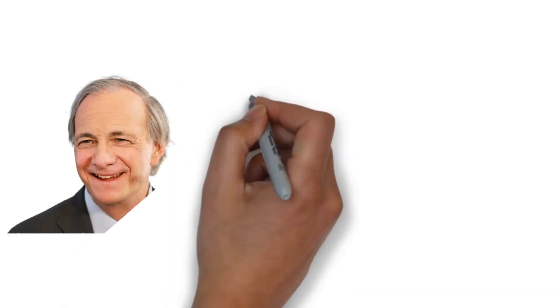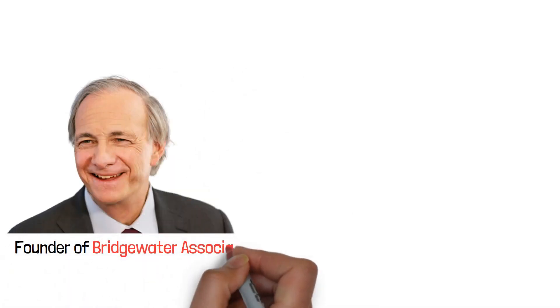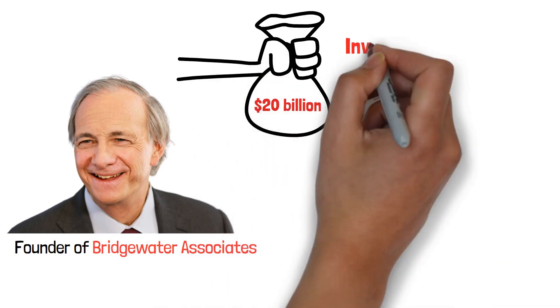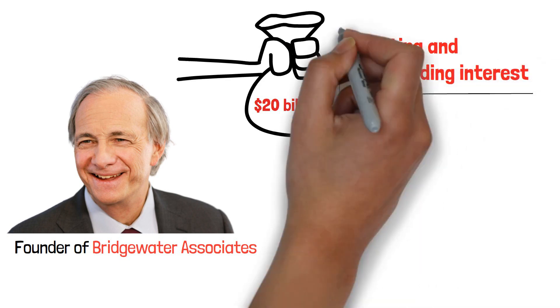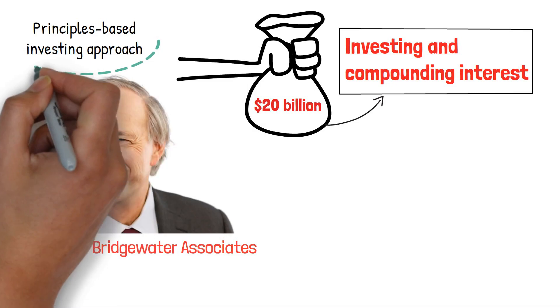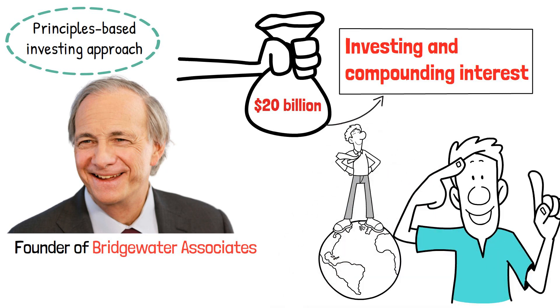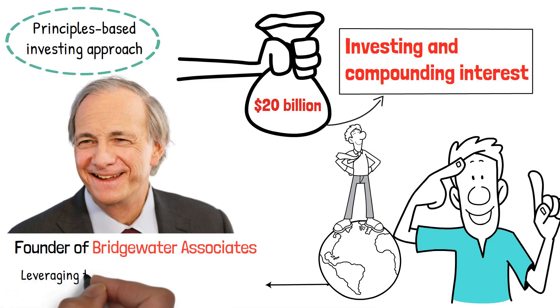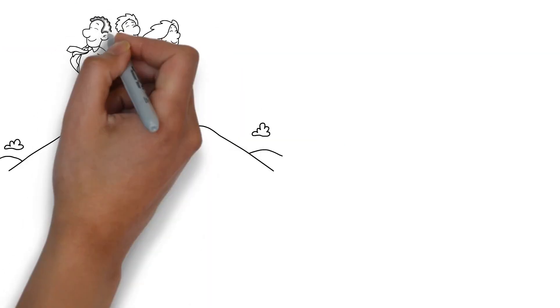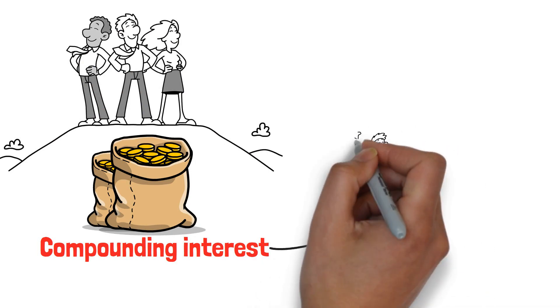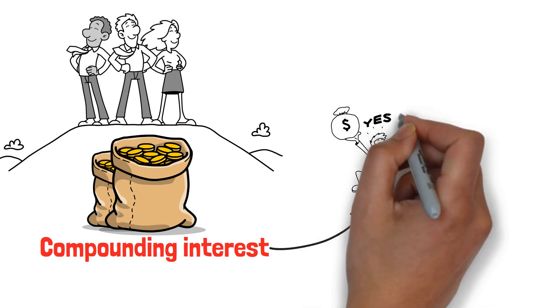Another famous example is Ray Dalio, the founder of Bridgewater Associates, one of the world's most significant hedge funds. He has amassed a net worth of more than $20 billion through his investing and compounding interest expertise. Dalio is known for his principles-based investing approach, which includes a thorough understanding of the economic and political landscape and the psychological biases that can influence investment decisions. Dalio has achieved incredible financial success by leveraging the power of compounding interest and intelligent investment strategies. These few well-known individuals have amassed a fortune through compounding interest. The key takeaway is that regardless of background or financial circumstances, everyone may leverage the power of compounding interest to generate wealth over time.